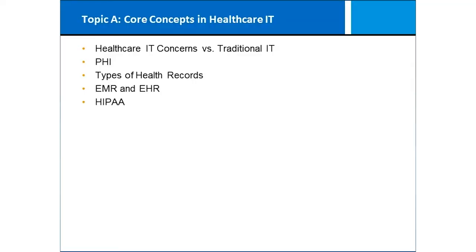We're going to talk about IT concerns in health care versus traditional IT and how they might be different, particularly in terms of privacy, portability, and what have you. We will talk about PHI — personal health information — and different types of health records, electronic medical records versus electronic health records, and the overriding principles of HIPAA.